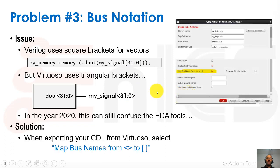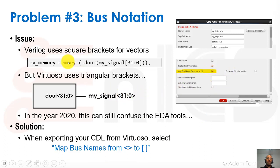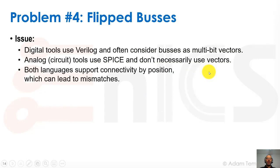The solution, if you're using an analog flow or a custom design flow to make your macros using Virtuoso, there's a form called CDLOUT. In the CDLOUT form, there's a checkbox that says 'map bus names from triangular brackets to square brackets,' and you should check that before you export your netlist. If you do that as an analog or custom block designer, your CDL will have square brackets. If not, we'll show you later some ways to get around this in the LVS flow.